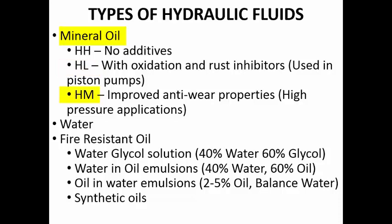The next one is HM category. HM means it is having oxidation and rust inhibitors as well as high anti-wear properties. This HM category can be used for very high pressure applications, because under very high pressure the hydraulic fluid should form and maintain a very thin layer of oil to prevent friction between the metallic surfaces. So HM category can be used at high pressure applications.